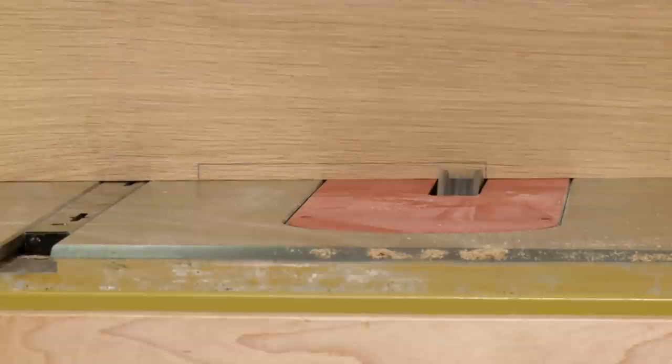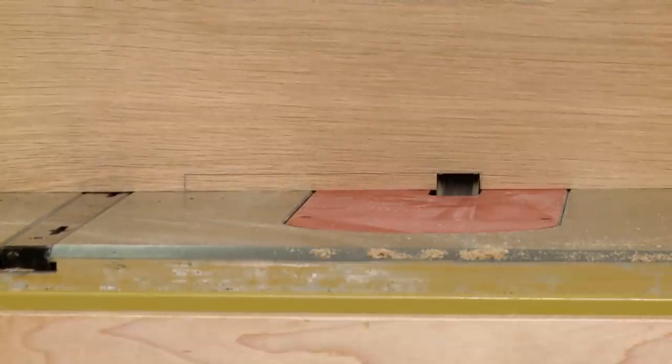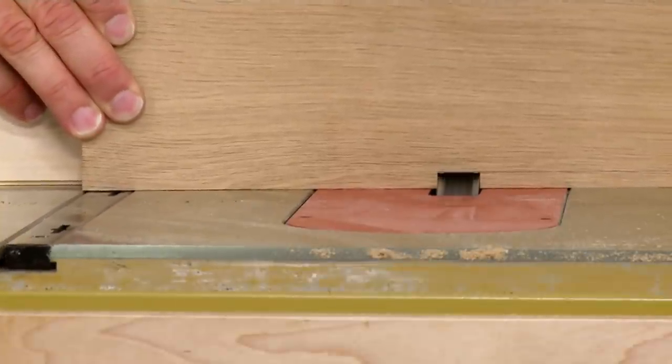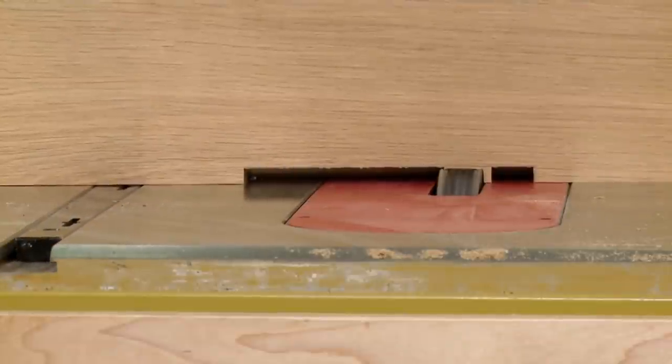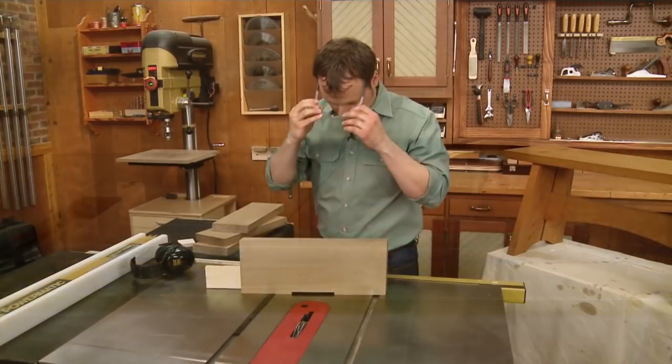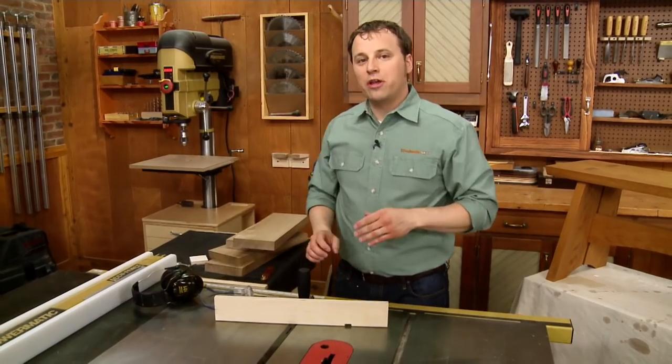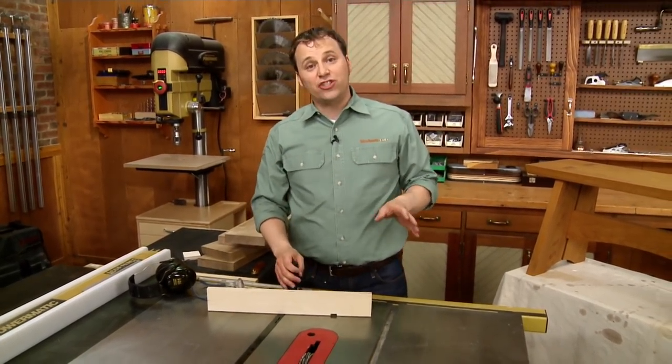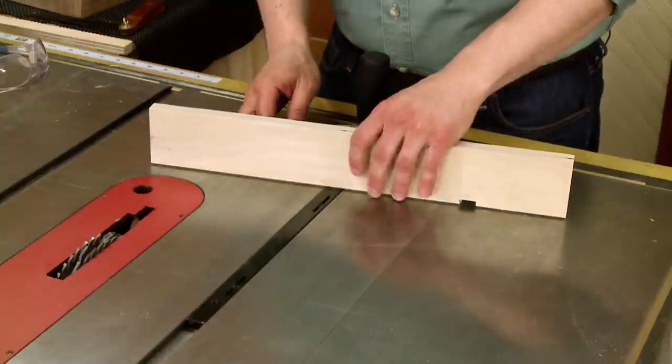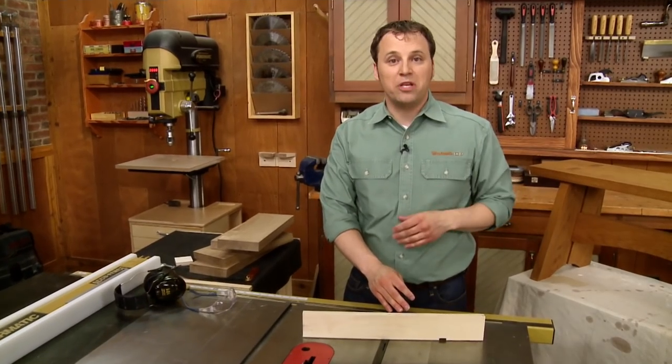To cut the dados, I'm going to start by making a cut at each end of the dado. Then I'll remove the remaining waste making multiple passes across the blade. That takes care of one set of dados. To cut the mirror image dados on the other legs, I need to change my setup a little bit. I'm going to start by moving the miter gauge to the other slot. Then I need to rotate it to the opposite angle setting. From there, I can just repeat the process.